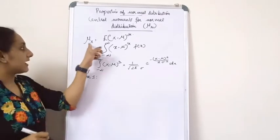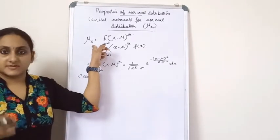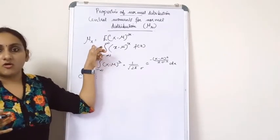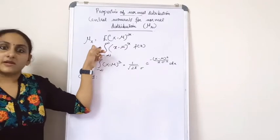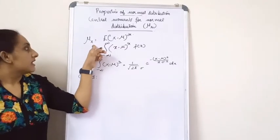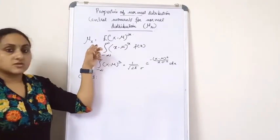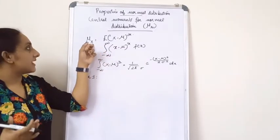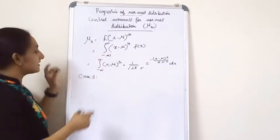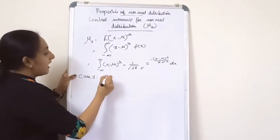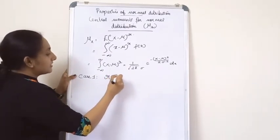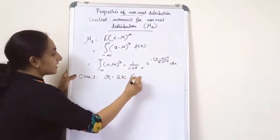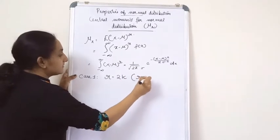Here r can be either an odd number or an even number. In case 1, r takes the value 2k where r is even, and k can take the values 1, 2, 3, etc.